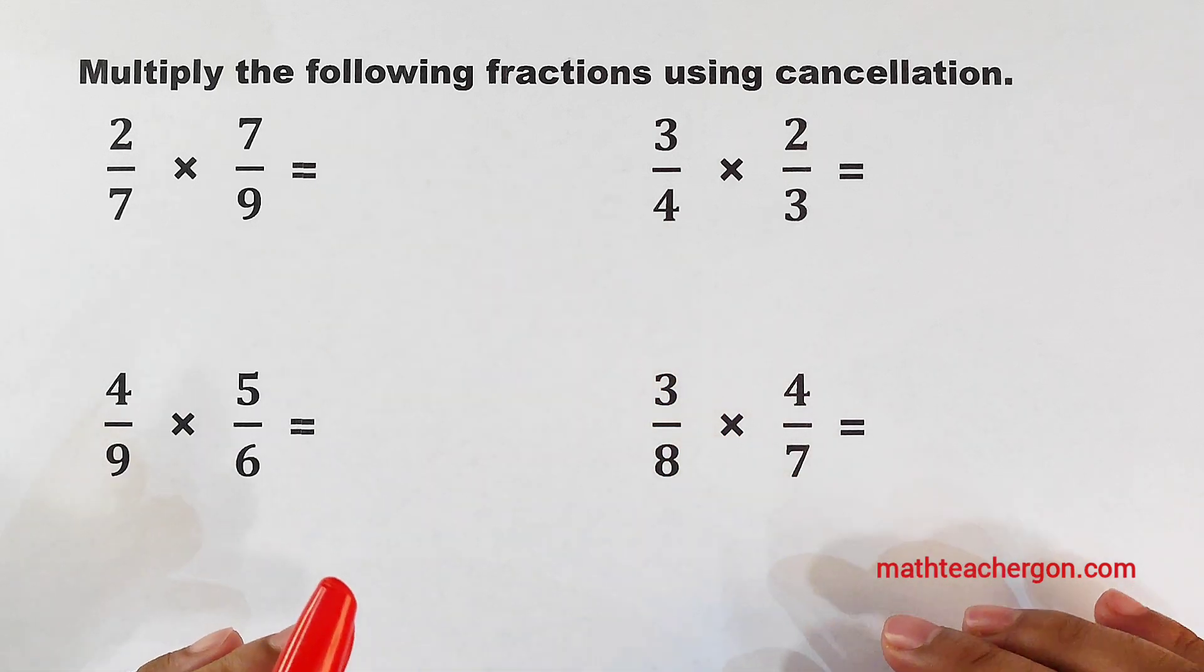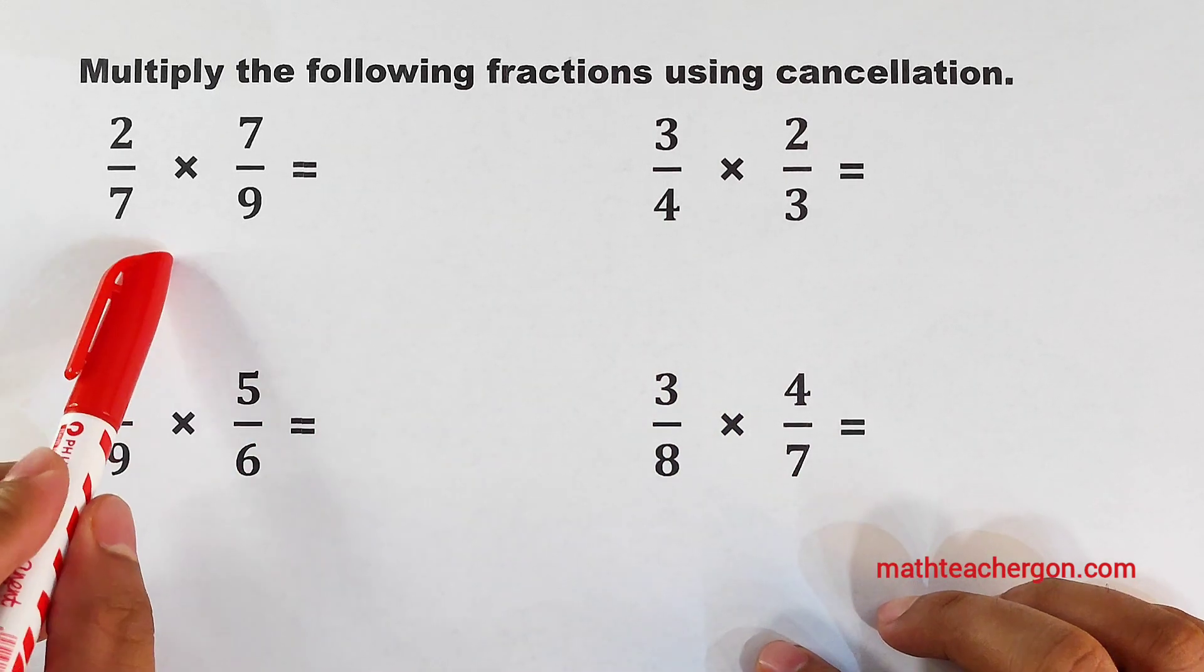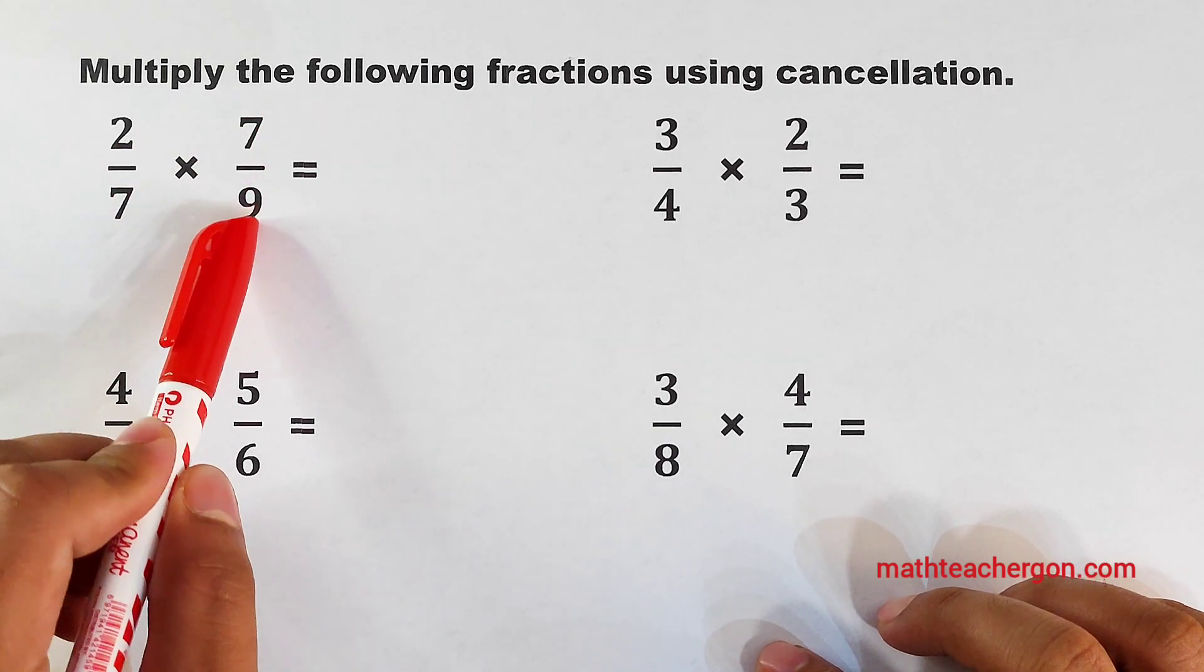So let me show you how to use the cancellation method on how to multiply fractions. Let's start with 2 over 7 times 7 over 9.